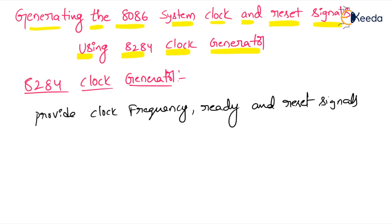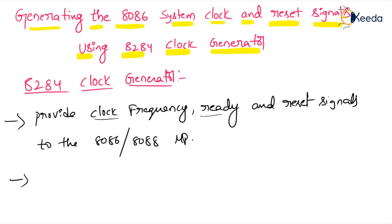By using the 8284 we can get clock frequency, ready signal, and reset signals for the 8086 and 8088 processors. The 8284 is an 18-pin chip. It produces the clock signal and synchronizes with the ready and reset signals, then provides them to the microprocessor.